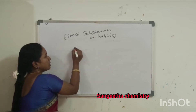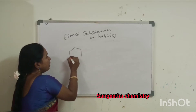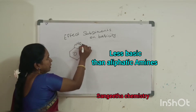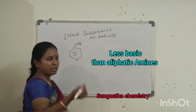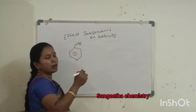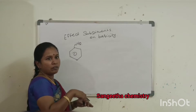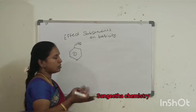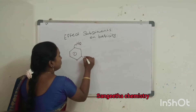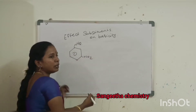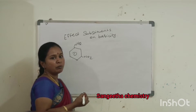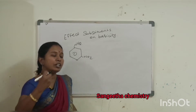Effect of substituents. Anilines are less basic when compared to aliphatic amines. The non-bonding electrons undergo resonance, making them less basic. For example, when you are adding a nitro group — one nitro group added — this is an electron withdrawing group.